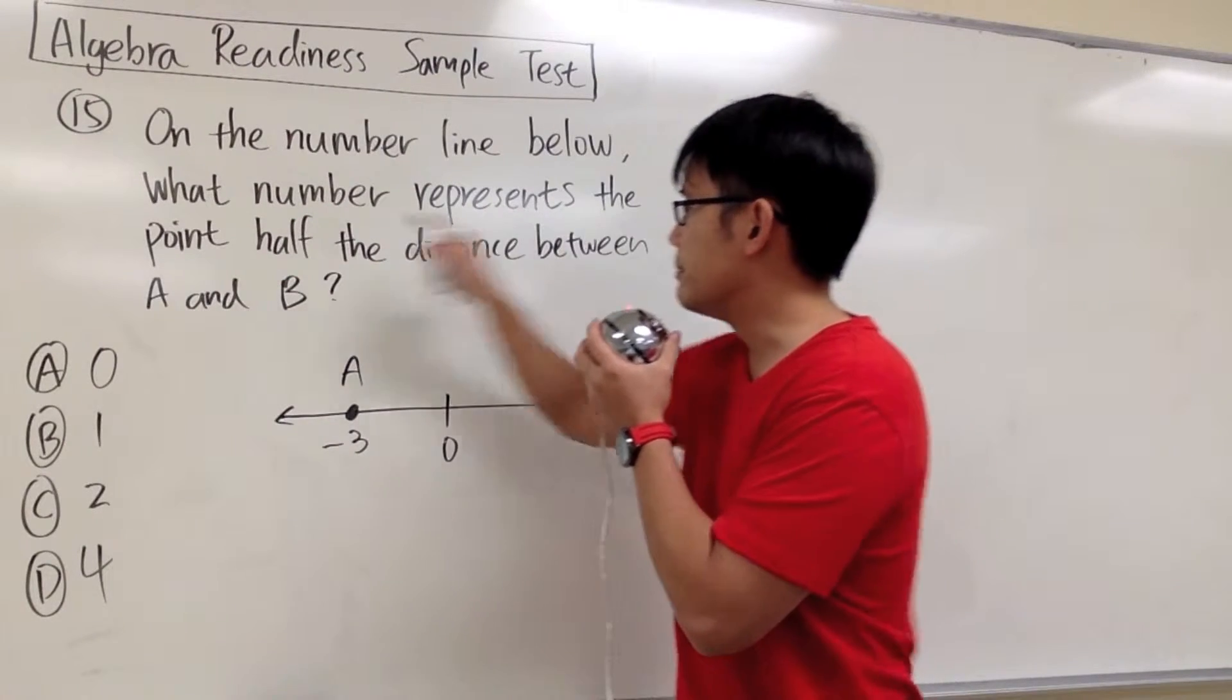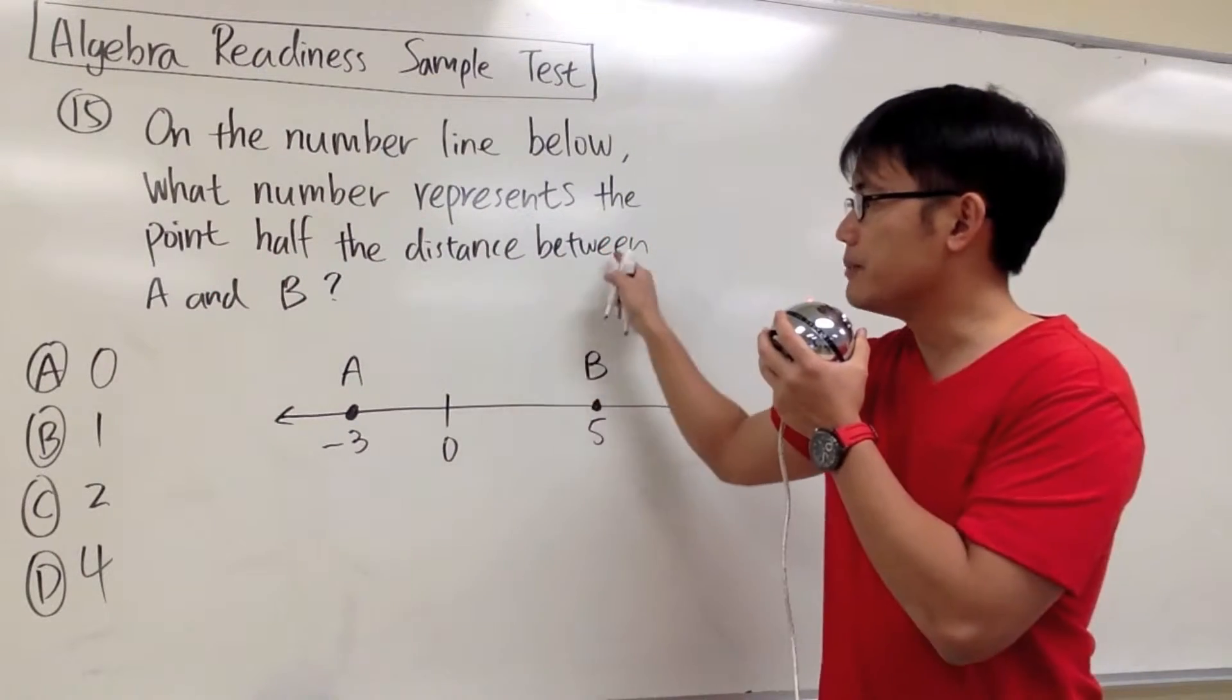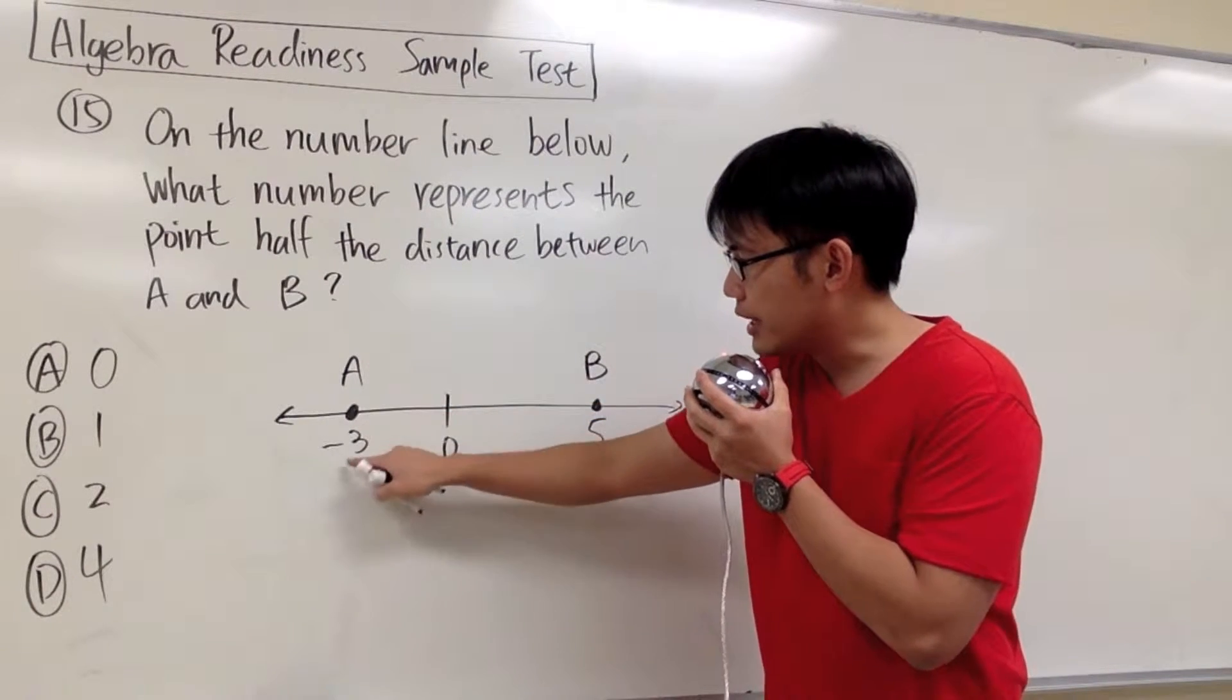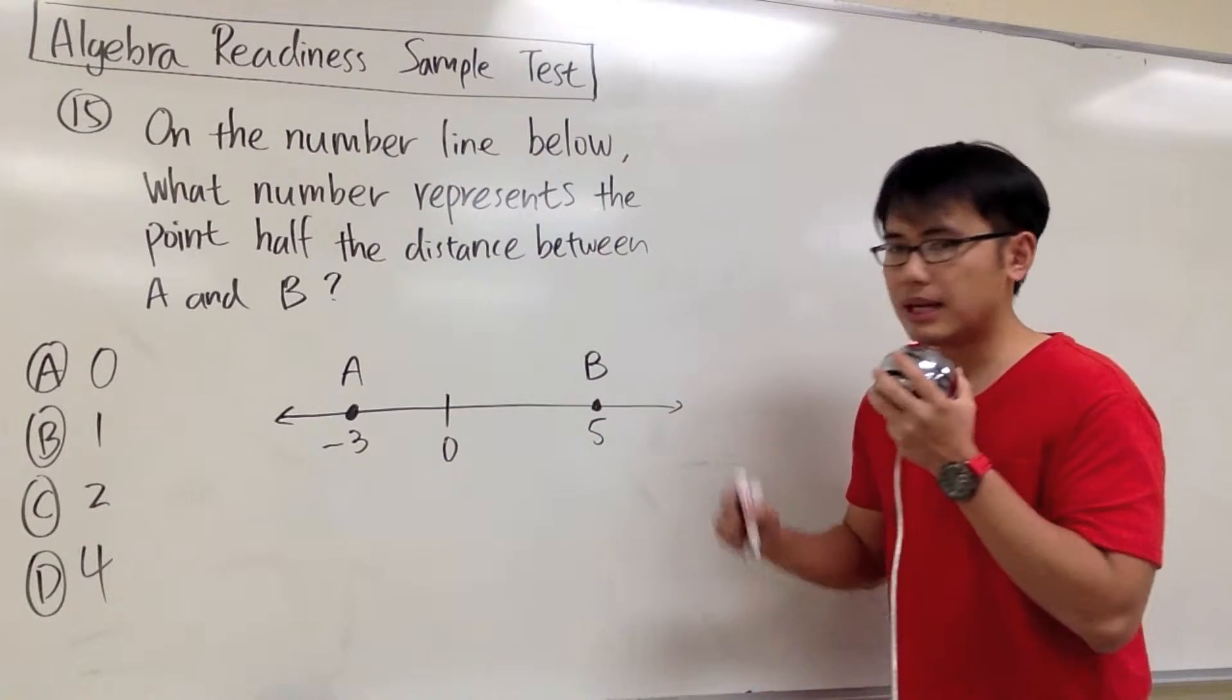what number represents the point half the distance between A and B? As we can see, A is the point at negative 3, and B is the point at positive 5.